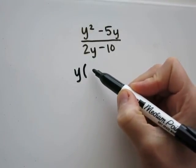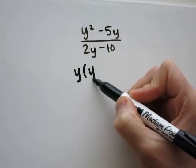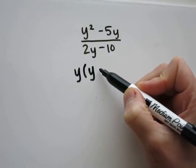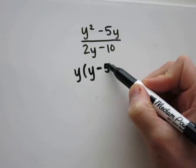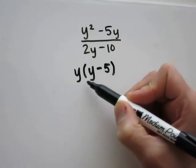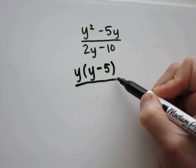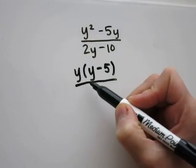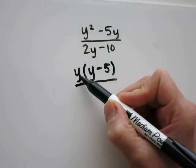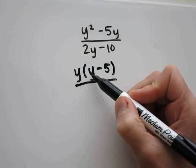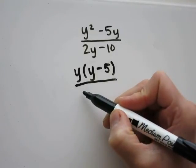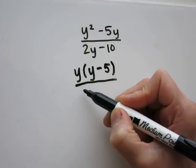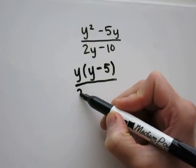y squared will become y when divided by y. Distribute to double-check: y times y is y squared, y times 5 is 5y. In the denominator, 10 and 2 are both divisible by 2, so I can factor out a 2.